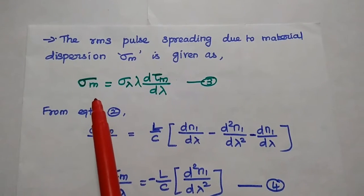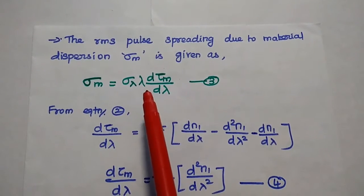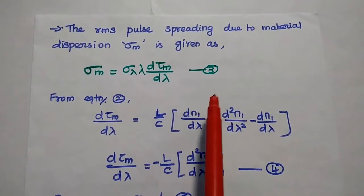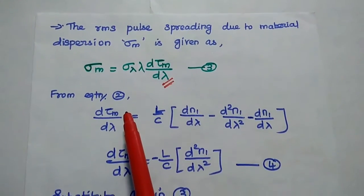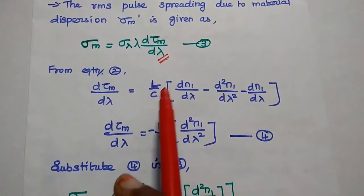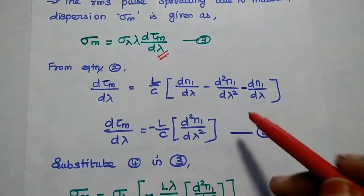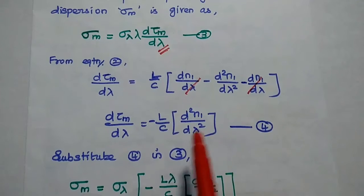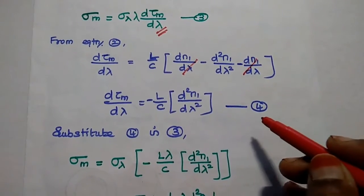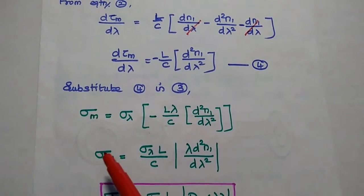From this, we can find out the material dispersion factor. Here σm equals σλ times L times the differentiation of the group delay with respect to lambda — consider this as the third equation. From the second equation, dτm/dλ equals (L/c) times (dn1/dλ minus d²n1/dλ² minus dn1/dλ). We can cancel those two terms, getting the answer as minus (L/c) times d²n1/dλ². Consider this as the fourth equation.